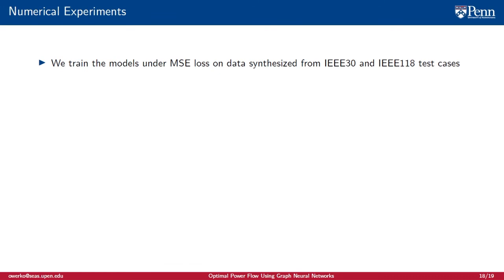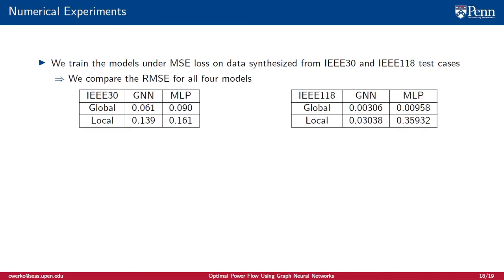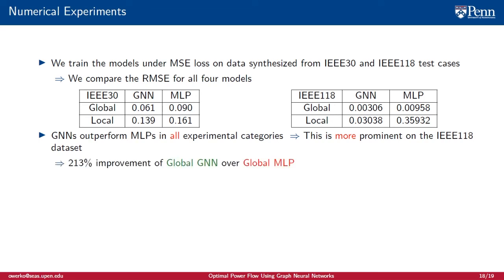In our numerical experiments, we train the models under MSE loss on data from the IEEE 30 and IEEE 118 test cases. We evaluate the performance of each model using root-mean-squared error. GNNs outperformed MLPs in all experimental categories, but this difference is more prominent on IEEE 118. We see a two-fold improvement between the global architectures and a ten-fold improvement between the local architectures.